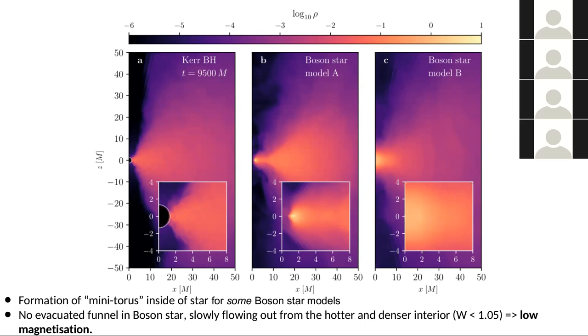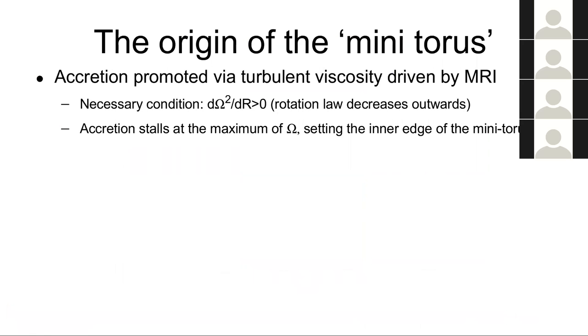And none of these do evacuated funnels like this one. If you look at the magnetization, which is really important to launch a jet out of them, none of these have evacuated funnels. None of these have jet-like outflows. That's of course important if you think about M87. So they wouldn't really work. So what's the origin of this mini torus? We were looking at this and it actually turns out that it's quite nice in terms of accretion physics.